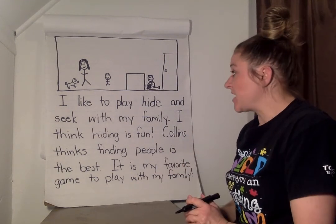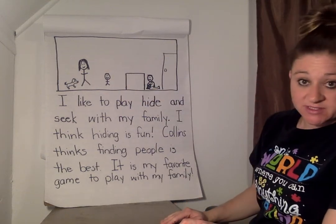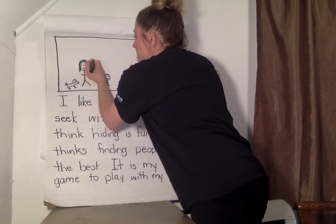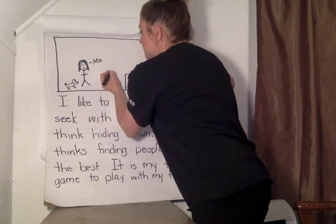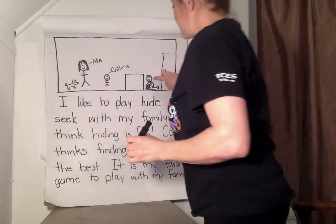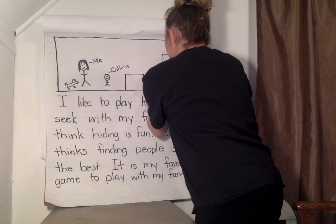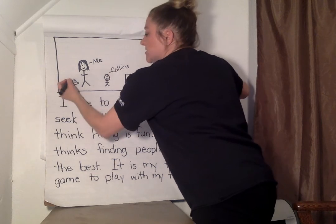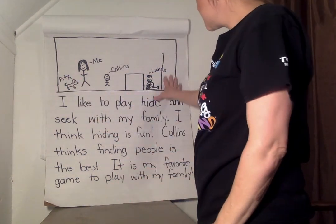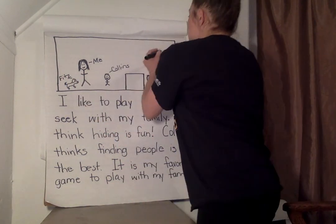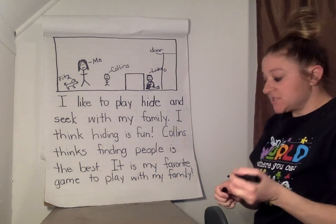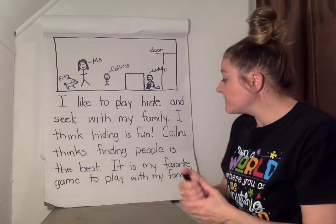Now that I'm done with my writing, I can come up here to my picture and label all of the parts that I know. I'm going to label myself — I'll put 'me' right there. Right there is Collins, there's my husband Luke, and our dog Fitz. There are a couple other parts I could label too — I could label this as a door or a coffee table. I'm going to stop right there. You can also add color if you want.